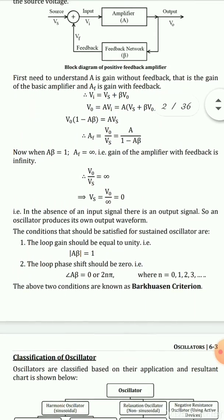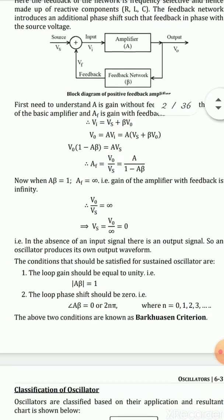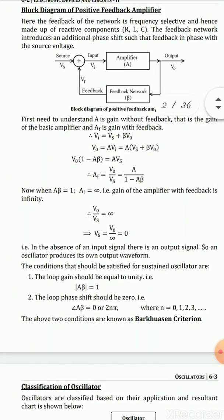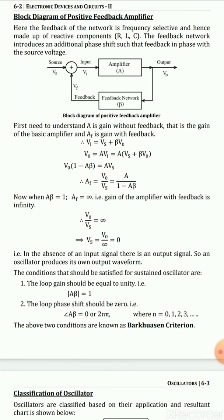The second condition is that the loop phase shift — from the input of the amplifier to the output, and from the output back to the input through the feedback network — should be 360° or 0°, meaning a multiple of 2π. These two conditions are required for sustained oscillation and are known as the Barkhausen criteria. This criteria is very important; in the exam, you will get a question based on Barkhausen criteria for 4 to 5 marks, so write both conditions along with the block diagram and the derivation.